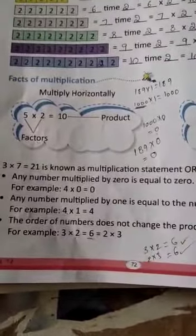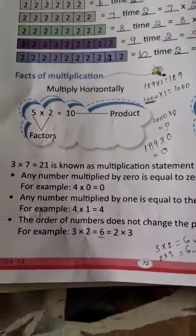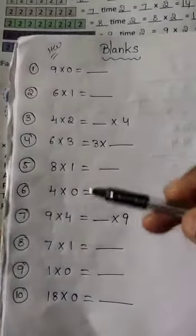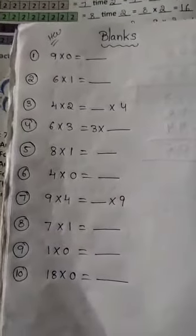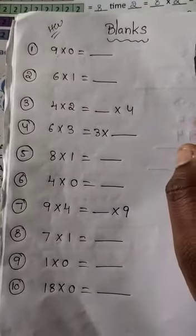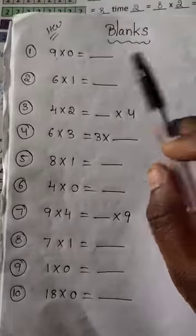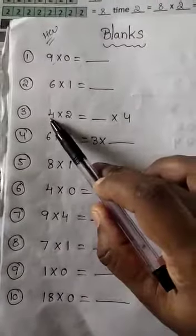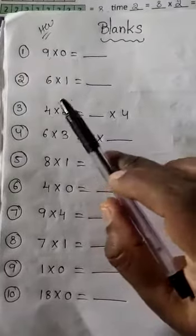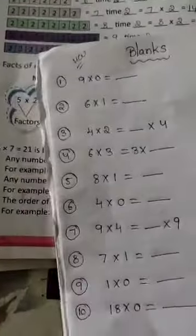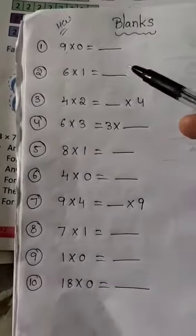I will use these three facts to fill in some blanks. The three properties are: first, multiply by 0 and the answer is 0; second, multiply by 1 and you get the same number; third, changing the order does not change the product. The answer is the same — this is the basis of these three properties.